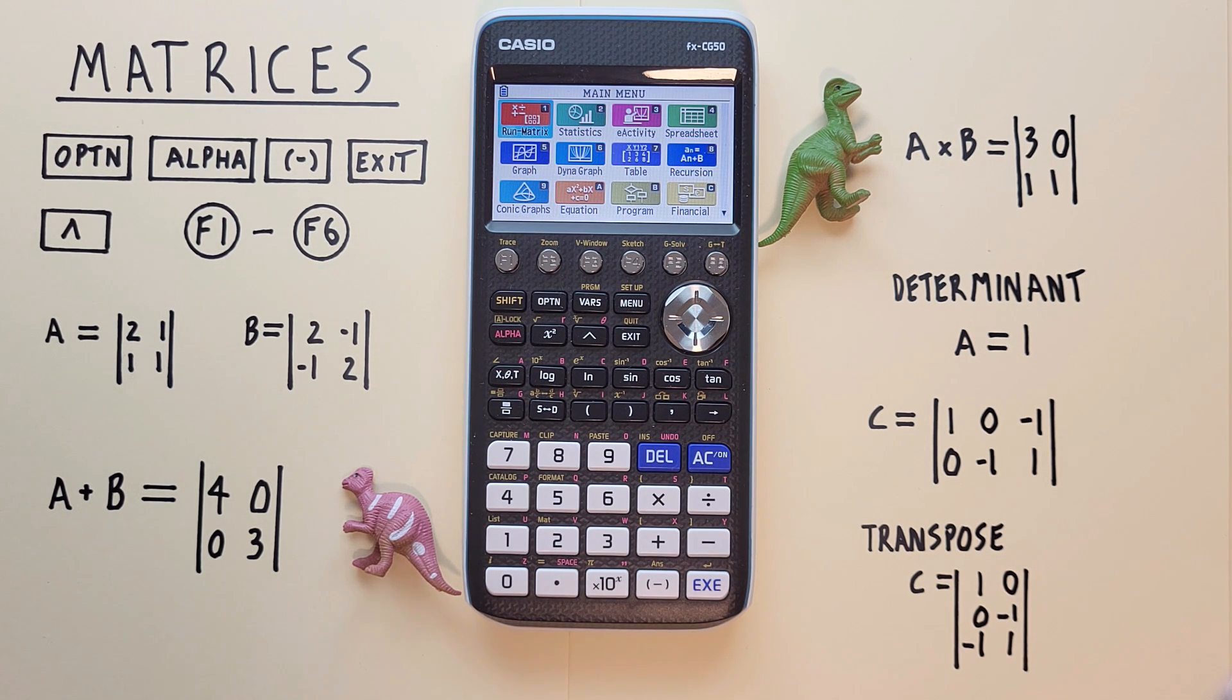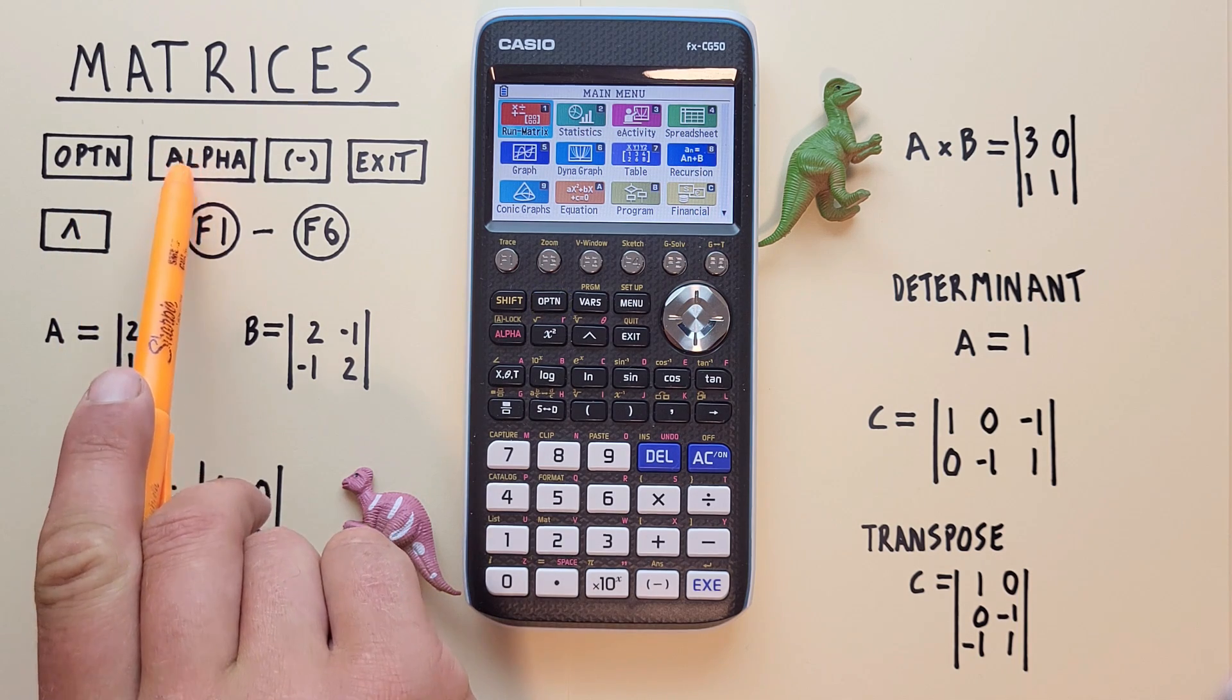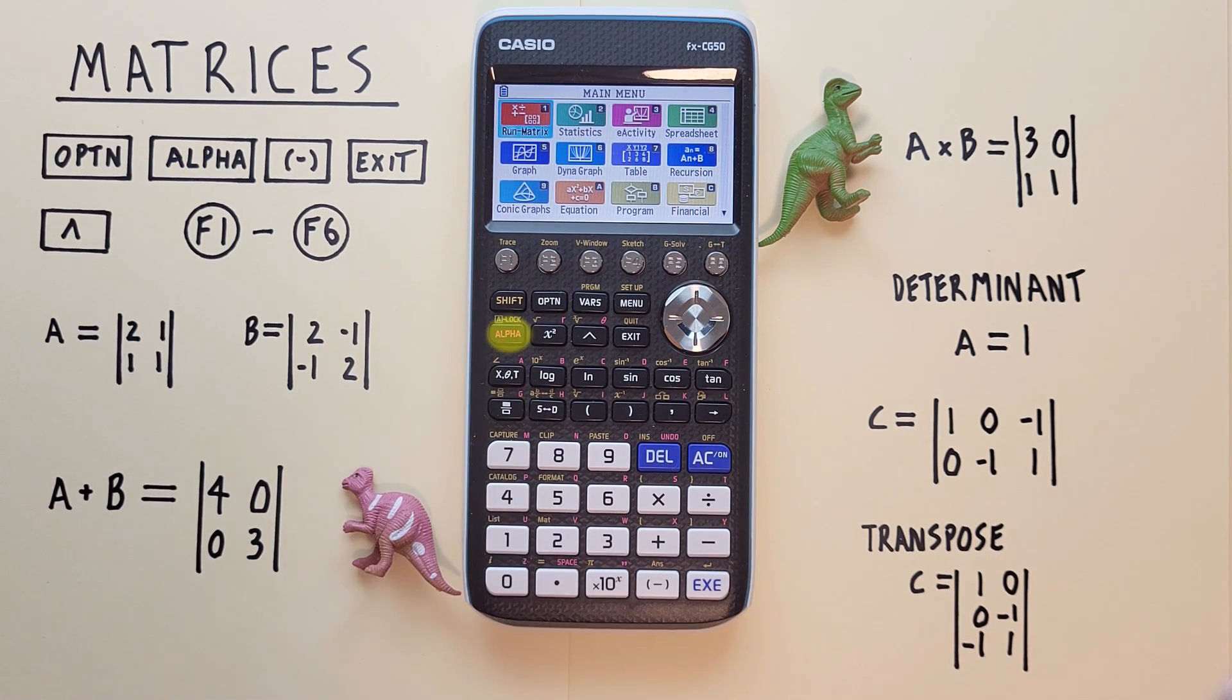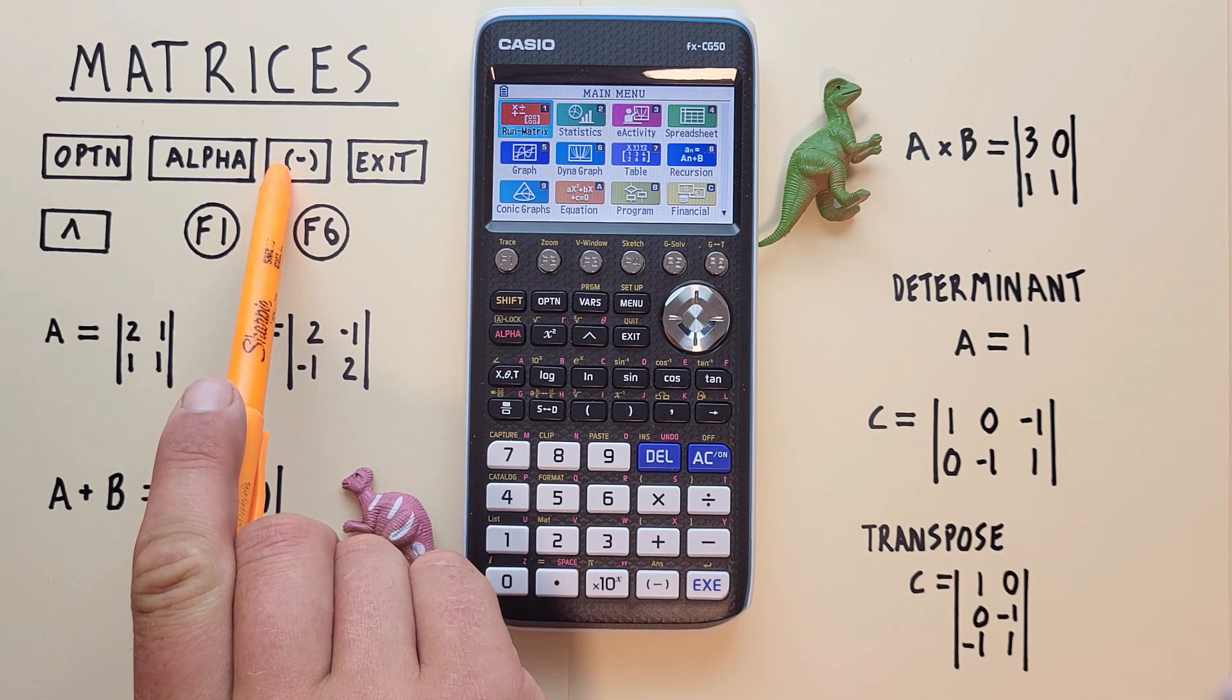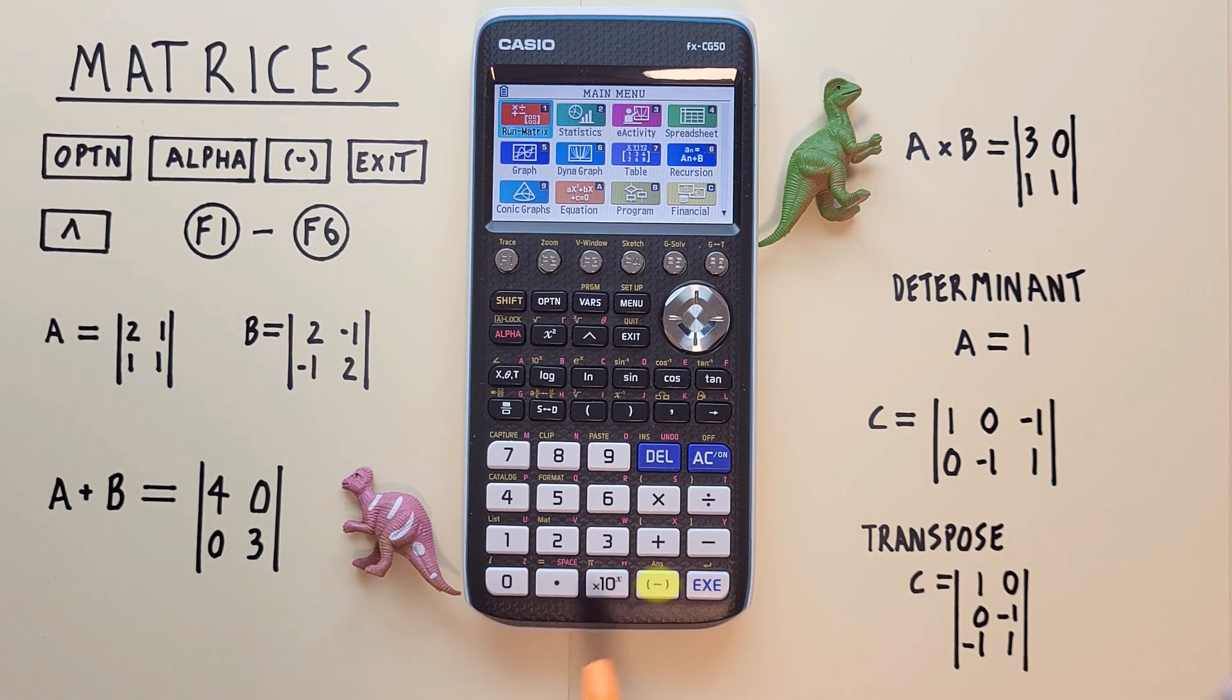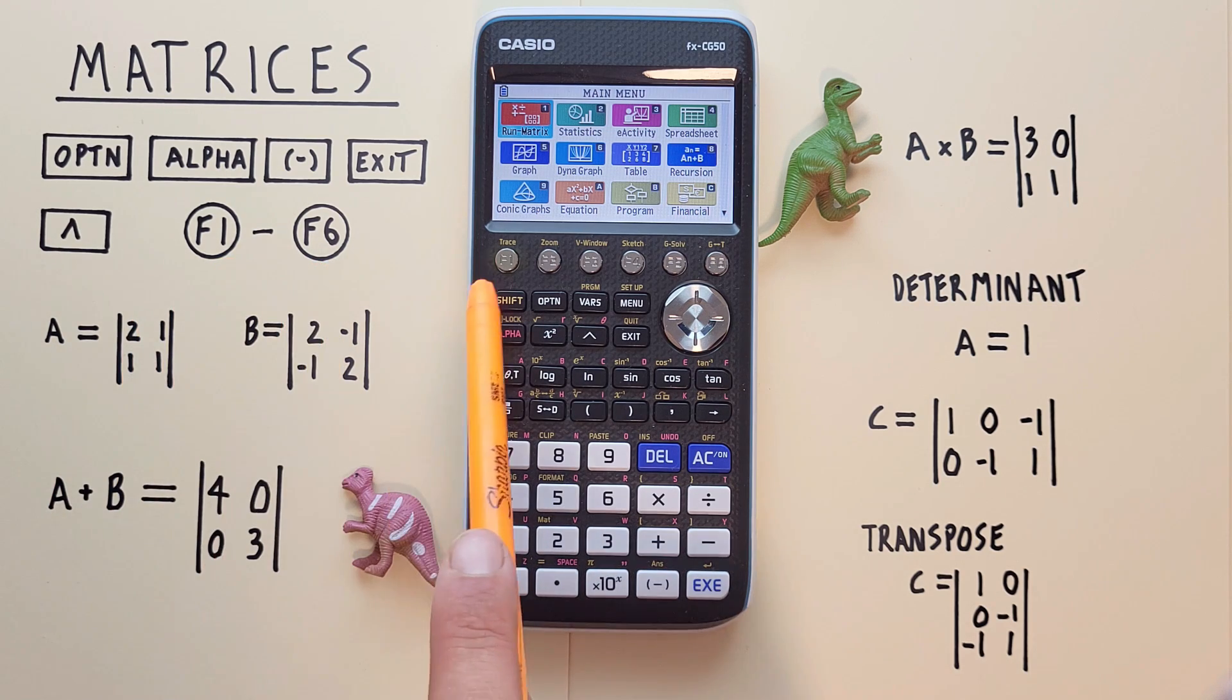To work with matrices, we'll use the Option key located here, the Alpha key located here, the Negative key located down here, the Exit key located here, the Up Arrow or Exponent key located here, and the F1 through F6 keys located across the top here.